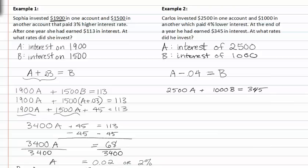We know that B is equal to A minus 4 percent, so I'll substitute that in for B.